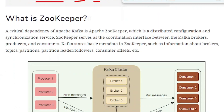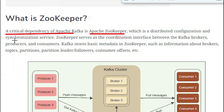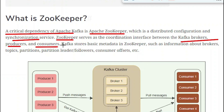So what is ZooKeeper? A critical dependency of Apache Kafka is Apache ZooKeeper, which is a distributed configuration and synchronization service. ZooKeeper serves as a coordinator interface between Kafka brokers, producers, and consumers — acting as an intermediate entity between all of them.